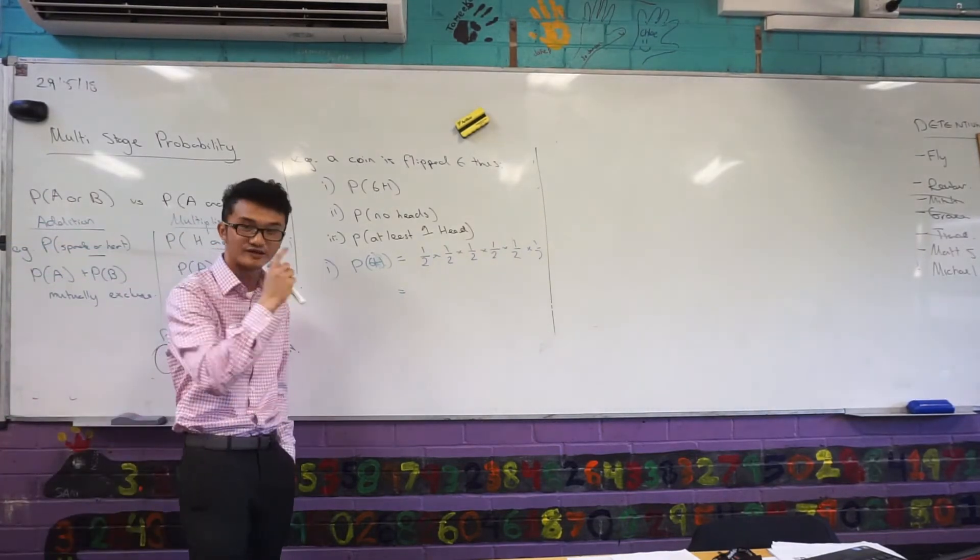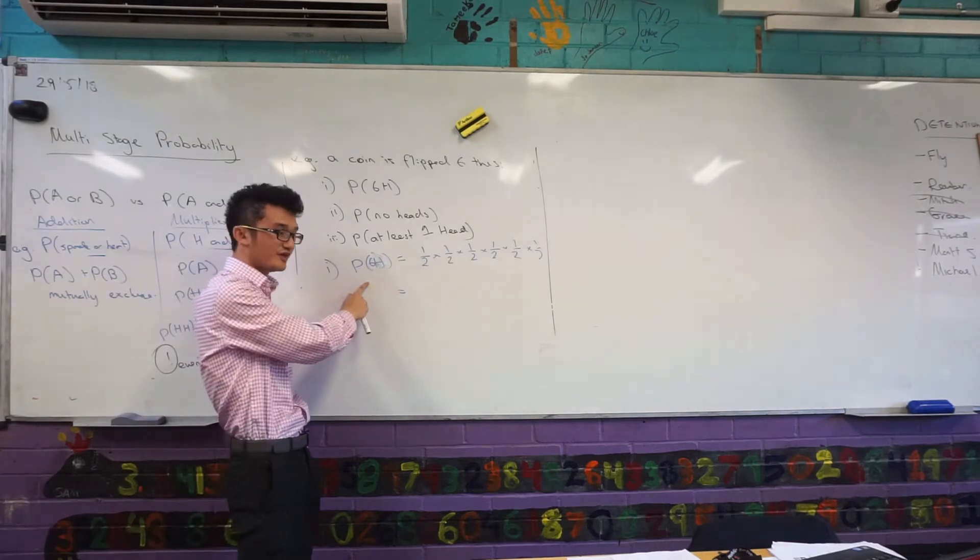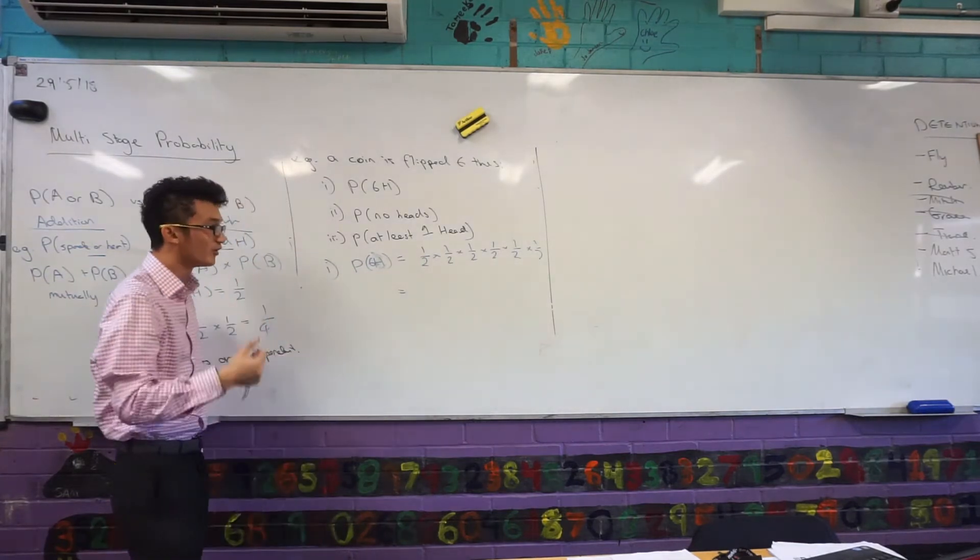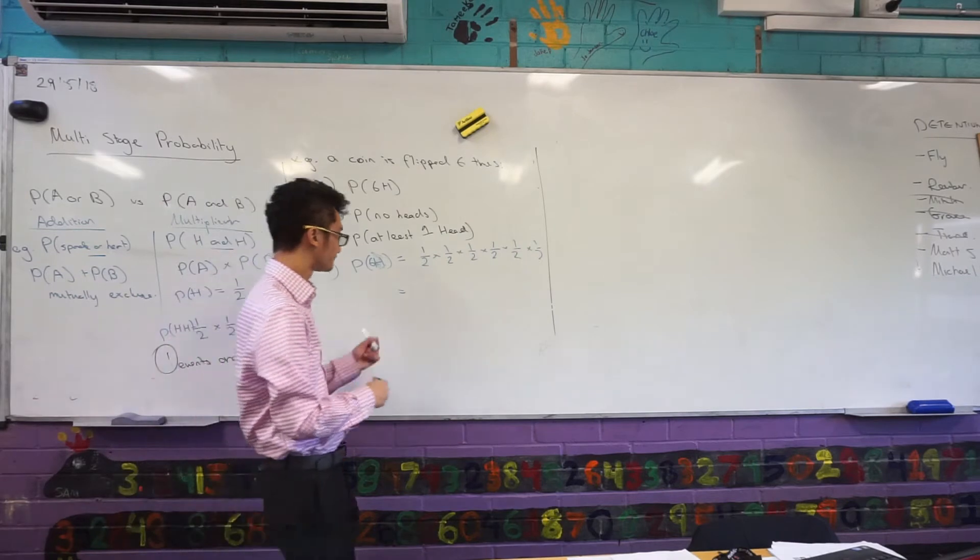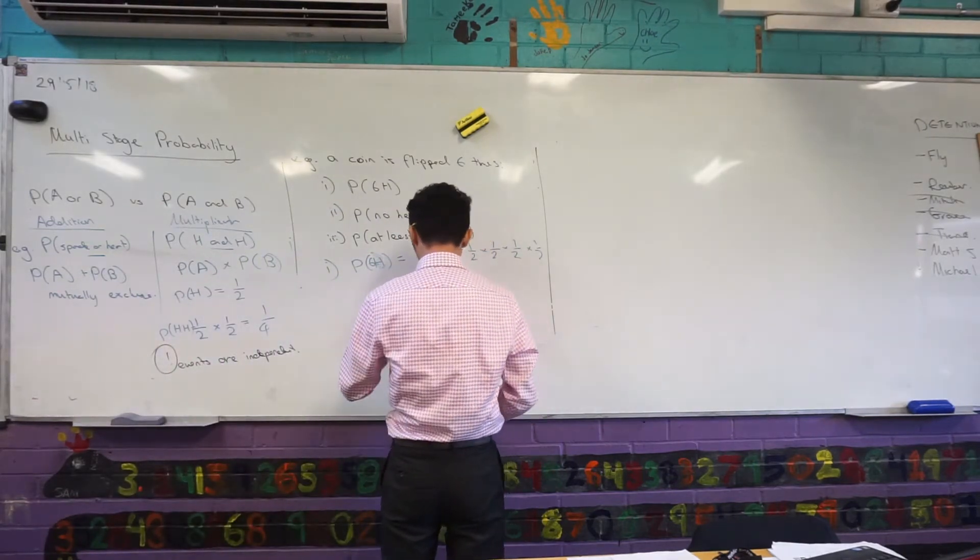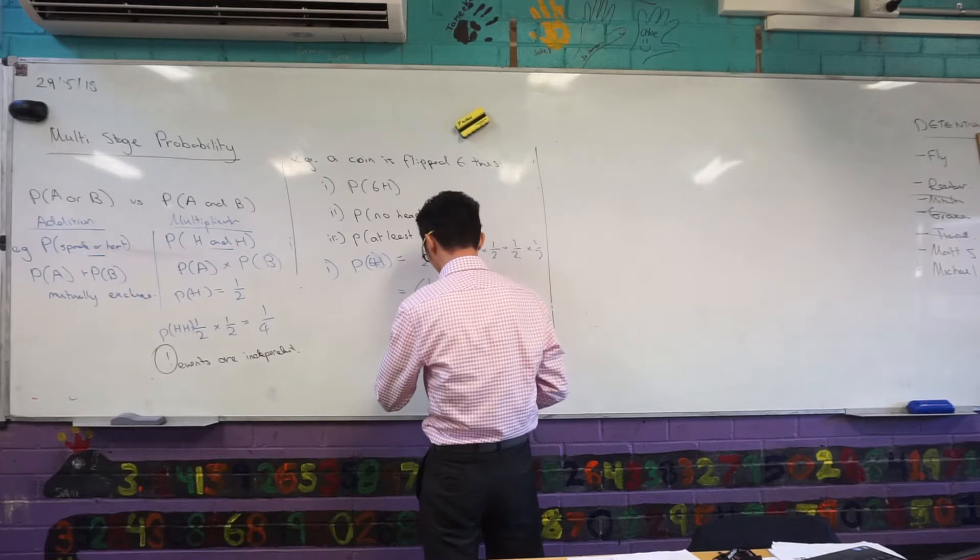Yeah, that's the notation I'm going to be using. A shorter way of doing this is to say, okay, well, if we're just multiplying half by itself six times, that's just half to the power of six, and that's equal to one over 64.